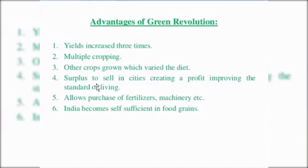From this video, we understand that green revolution means that by using modern methods and technology, production is increased. In India, it was started in the late 1960s. The father of green revolution in India was Dr. M.S. Swaminathan. The most important advantage is that India becomes self-sufficient in food production after the green revolution. It was mainly seen in the areas of Punjab, Haryana, and some parts of Uttar Pradesh. Thank you.